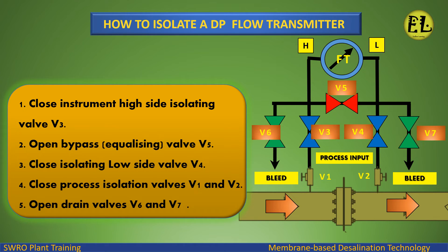Basic isolation procedure: 1. Close instrument high side isolating valve V3. 2. Open bypass equalizing valve V5. 3. Close isolating low side valve V4. 4. Close process isolation valves V1 and V2. 5. Open drain valves V6 and V7.